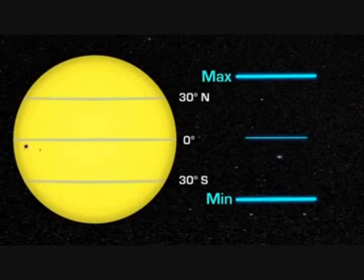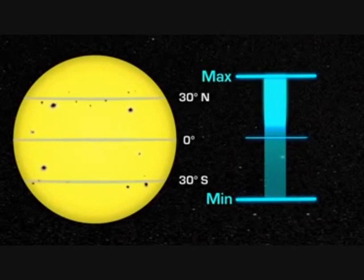At solar minimum, there are sometimes no sunspots to observe. At solar maximum, there can be many at the same time.